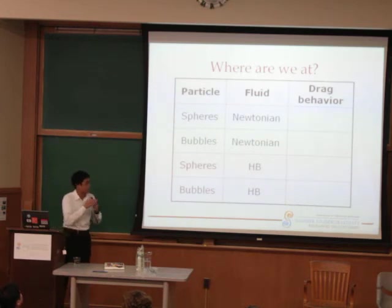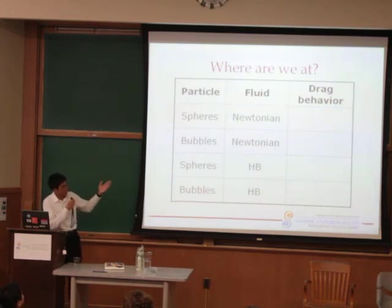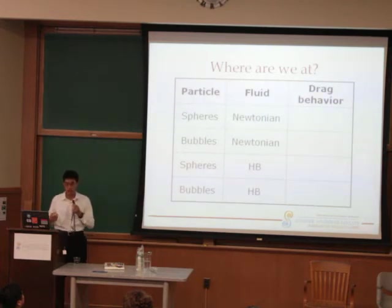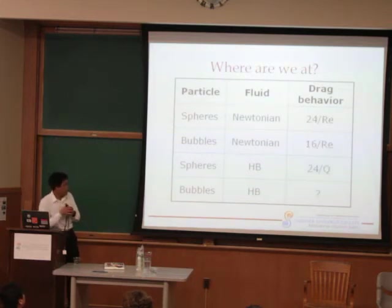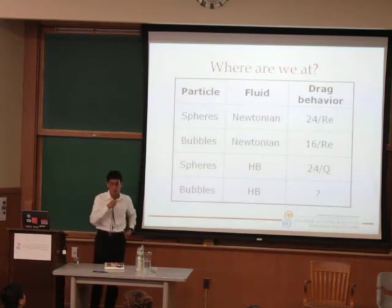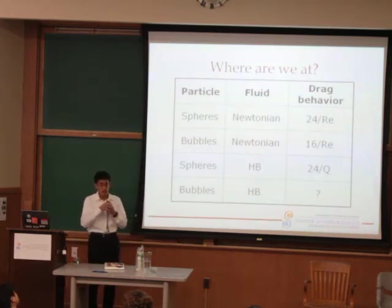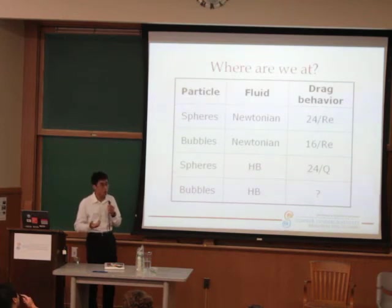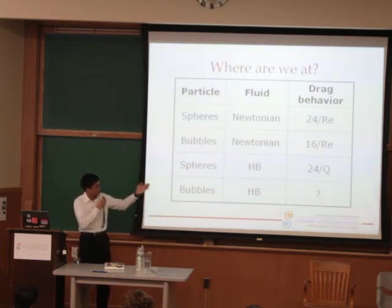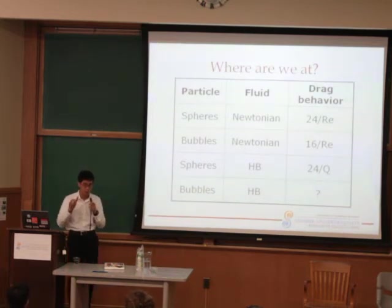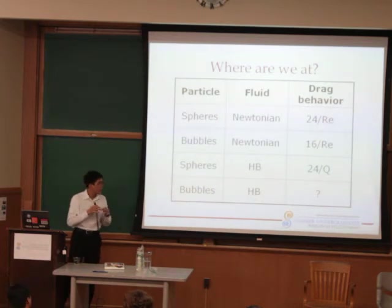So where are we at in terms of current knowledge? As I mentioned, we know most everything about Newtonian fluids — spheres and bubbles have been characterized for a long time and seen wide use in many disciplines including geology and physics. And it turns out spheres in Herschel-Bulkley fluids have been pretty well studied too, though much of it has come from empirical arguments. It's been much more difficult to form a theoretical argument, because the flow field is more complicated — you have material that's both solid and fluid and you have to differentiate between the two. But we have something that kind of works. This Q here is similar to a Reynolds number, with extra terms added to compensate for the more complicated fluid. But bubbles aren't so well characterized.